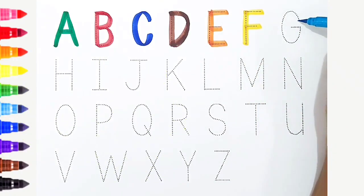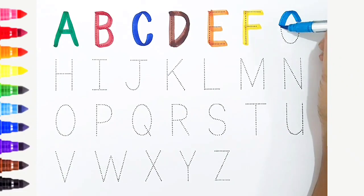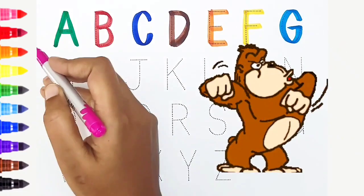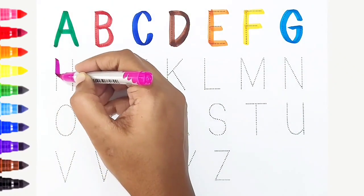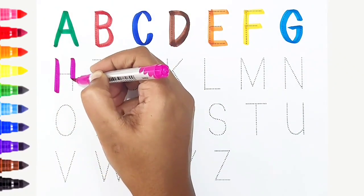G, light blue color. G is for gorilla. H, dark pink color. H is for hat.